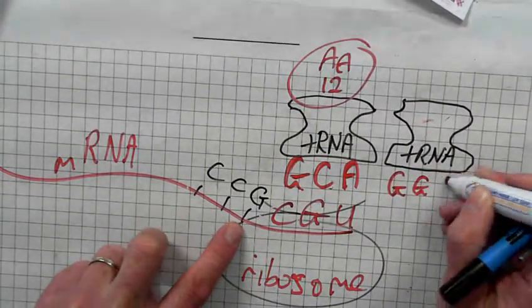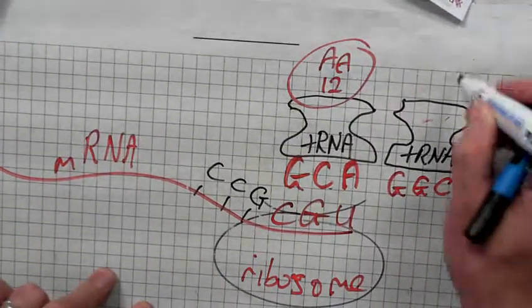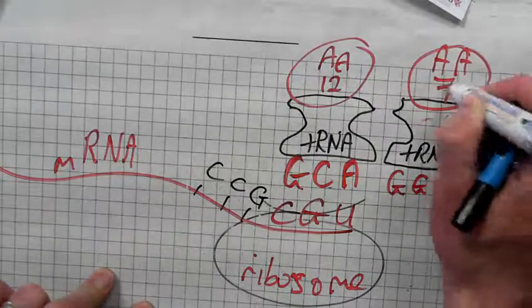G and? C. G. C. And let's say GGC. This tRNA molecule always carries an amino acid. Seven.